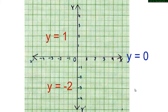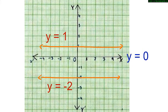Can you plot the lines y = 1 and y = -2 on this graph paper? We know the equation of the x-axis is y = 0. Therefore, y = 1 is a line parallel to the x-axis — any point on this line is 1 unit above the x-axis. y = -2 is also a line parallel to the x-axis, and any point on this line is 2 units below the x-axis.